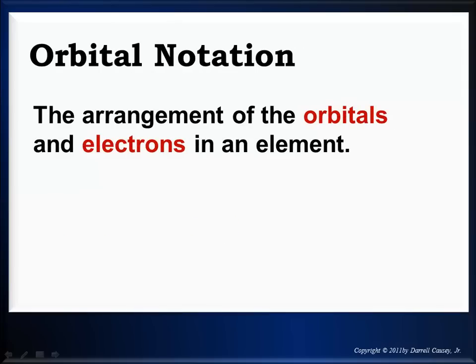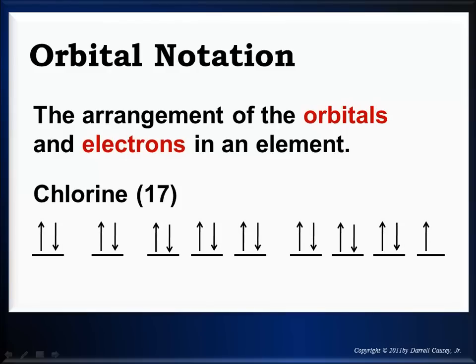But it's orbital notation. It's more interested in how the orbitals and electrons are arranged and focuses on the placement of the electron, not so much just that there are electrons. And we use arrows to help represent that. And it would look something like this. There's chlorine. And again you can go through and count that there's 17 electrons. And there's 1s, there's 2s, there's 2p, 3s and 3p.